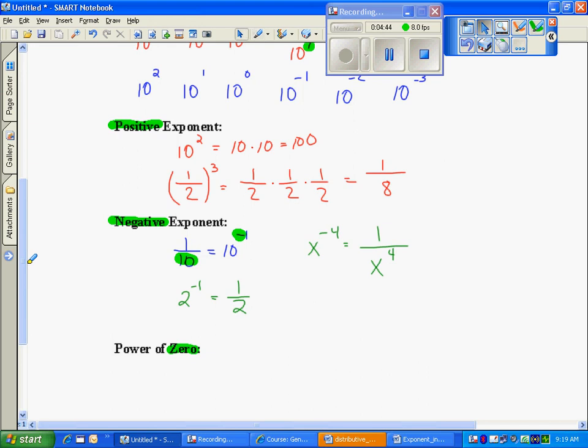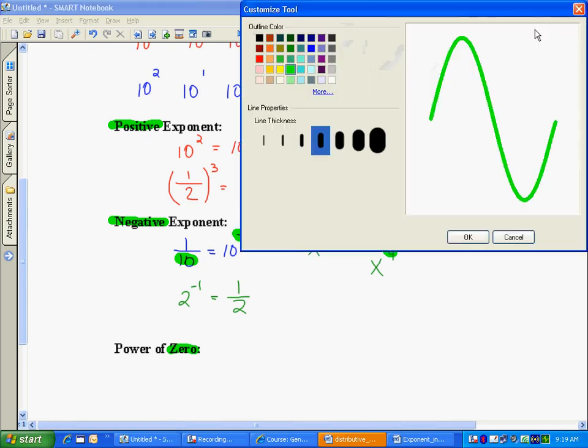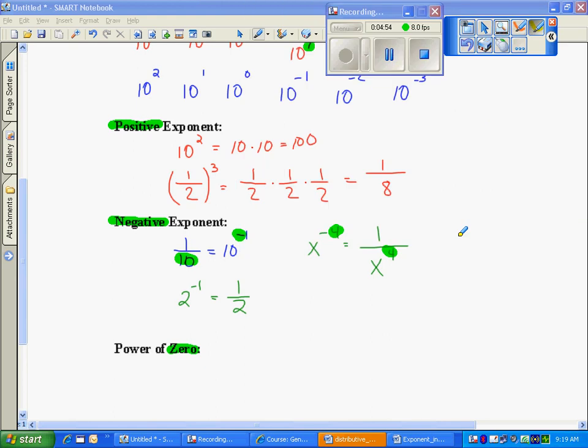Four times I multiply x by itself, but the negative is telling me the position in relation to the division bar in which the x will go. So if it's in the top, it simply moves to the denominator.